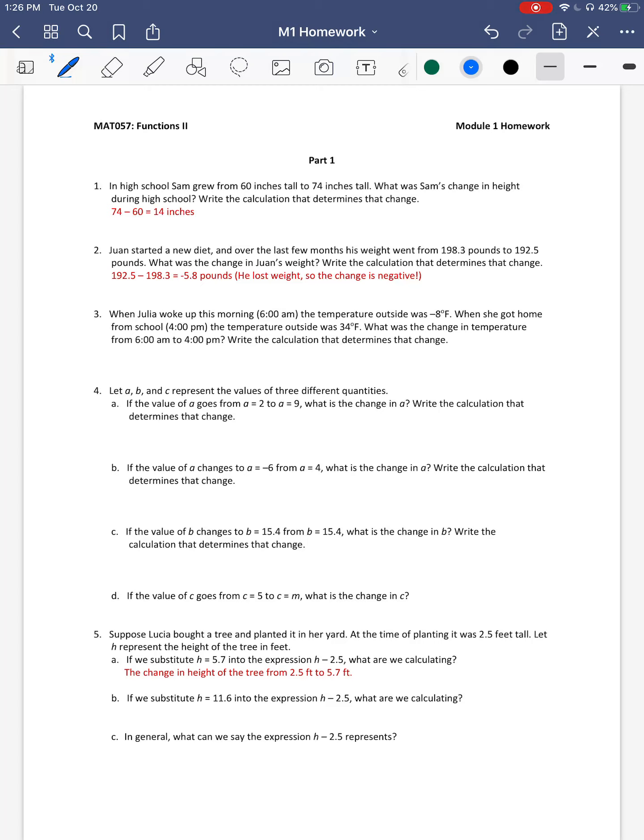Number 1 says, in high school Sam grew from 60 inches tall to 74 inches tall. What was his change in height? One thing to think about is did he get taller or shorter? Because if he got taller, which he did, we would expect that change to be positive. If he got smaller, if the number went down, we would expect that change to be negative. So when we do the subtraction, we would do 74 minus 60, and we get 14 inches.